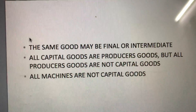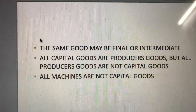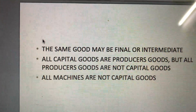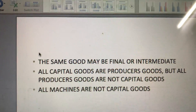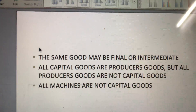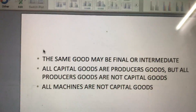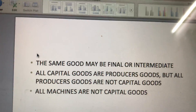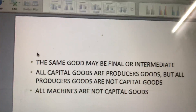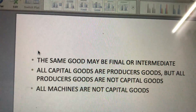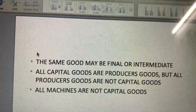A sewing machine in a tailoring shop is a fixed asset of the tailor — it is a capital good. But the same machine in a consumer household is not a capital good; it is simply a durable-use consumer good. Likewise, a car with a tourist company is a capital good, but the same car with a consumer household is a durable-use consumer good.